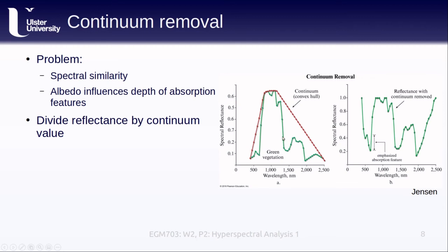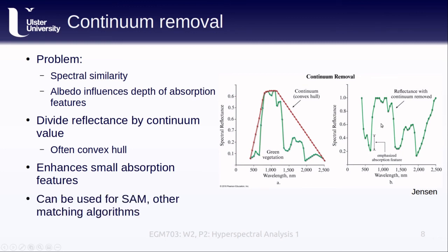To help accentuate these absorption features and aid in identifying surfaces from their spectra, we can divide the reflectance values by the continuum value. Basically, we take the smoothed out shape of the curve, often the convex hull of the data, and as a result, we end up with the curve here on the right, where we've now emphasized the absorption features in the curve, which can make it easier to compare the curves, especially with variable illumination. We can use this in conjunction with the methods that we've just covered, such as spectral angle mapping or cross-correlogram spectral matching, where it can help improve our results.